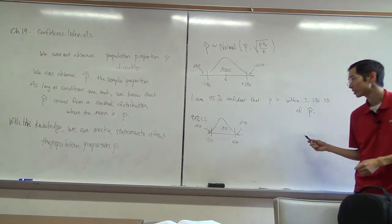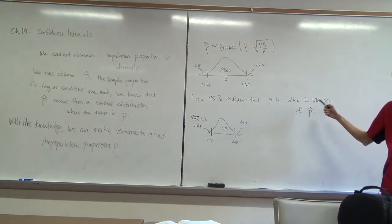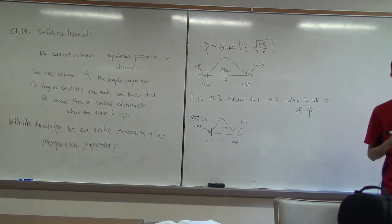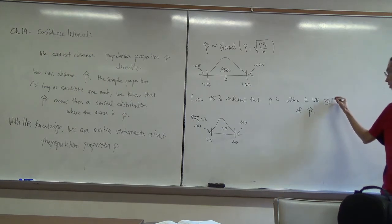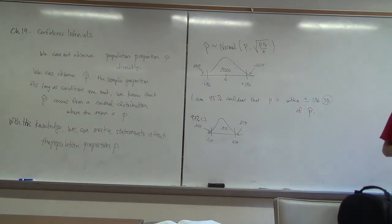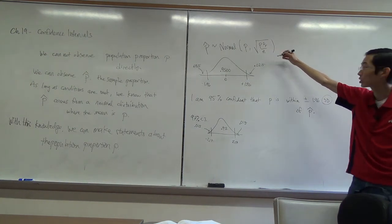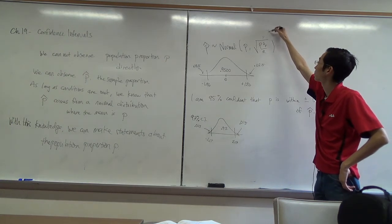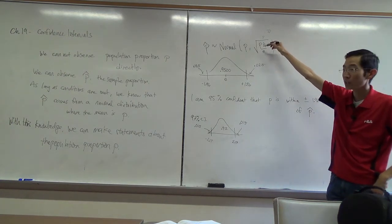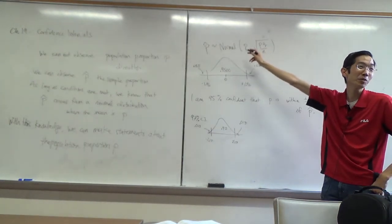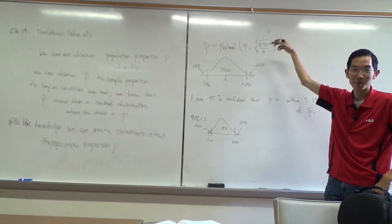There is one slight problem here. Can you see where we might run into trouble? I'm 95% confident that p is within 1.96 standard deviations — but the question is, how big is the standard deviation? The standard deviation of the sampling distribution relies on knowing what p is, but the entire premise is that we don't know p.